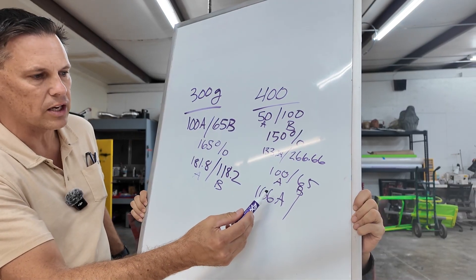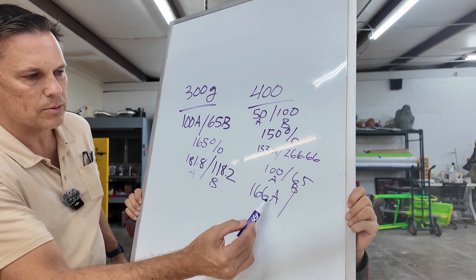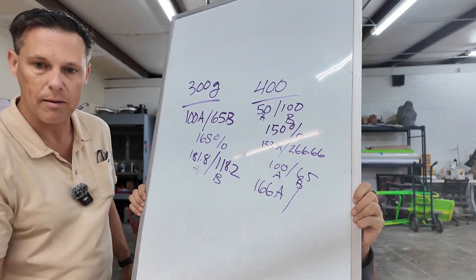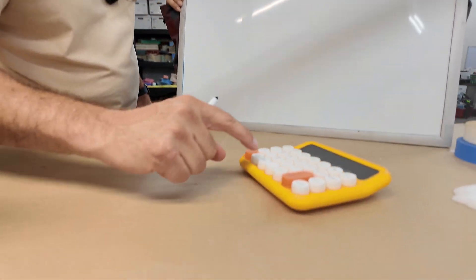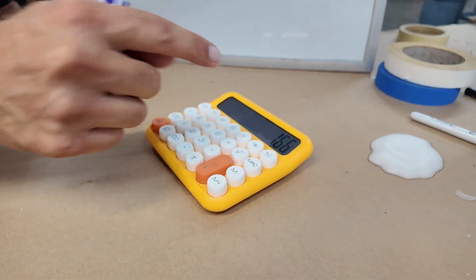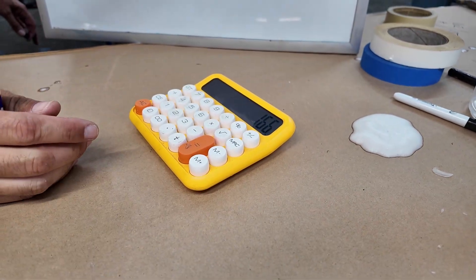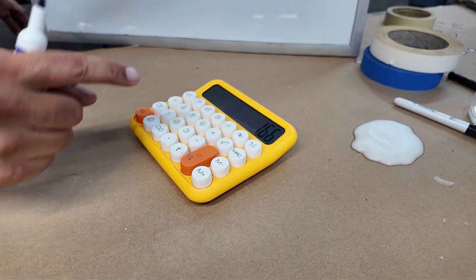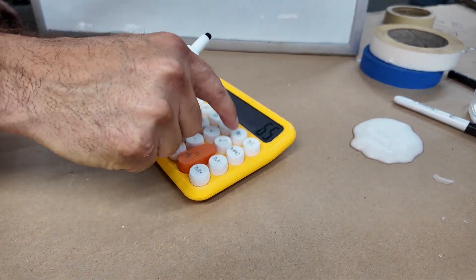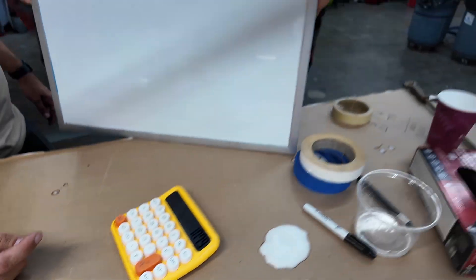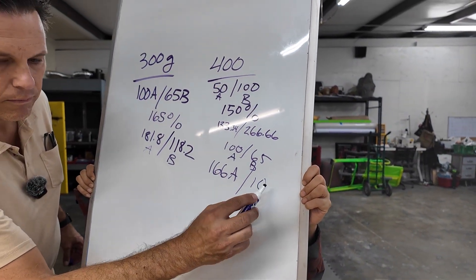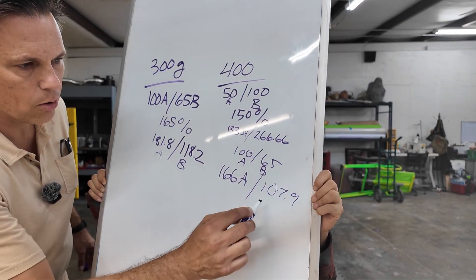We want to go with this product, which is 165. This one's really pretty easy. This is going to be 166 grams of A. Then we're just going to multiply 65% to figure out what that B is. It's even easier. Sometimes you're like, I don't know exactly how much, but I'm going to eyeball it. If you multiply that by 65%, 107.9 is the B, or 108 to round up.